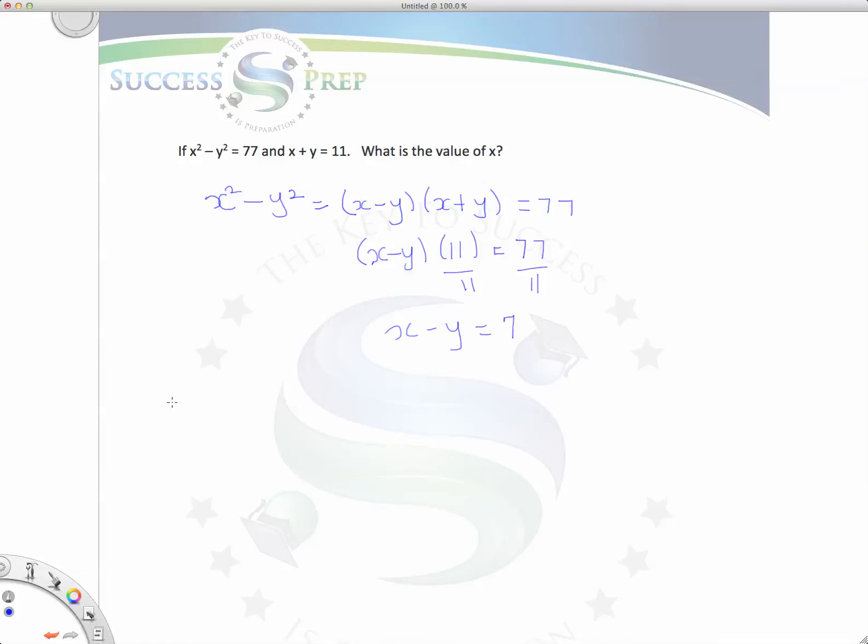So now what you have is two equations: x minus y equals 7 and x plus y is equal to 11. That was the second equation that we had.